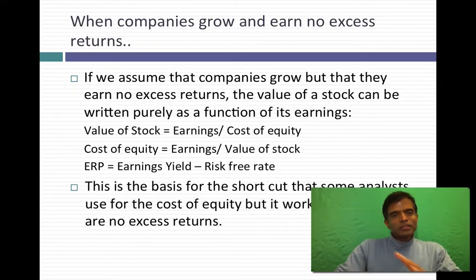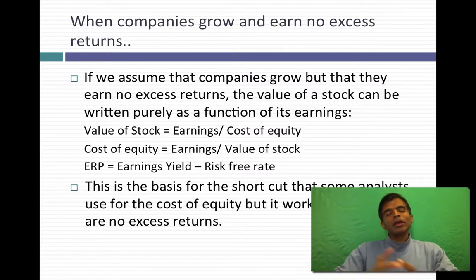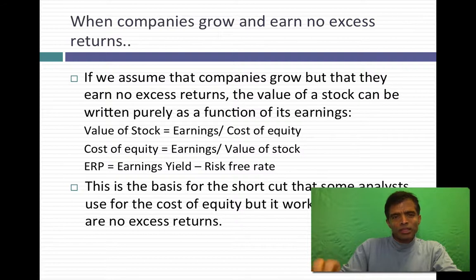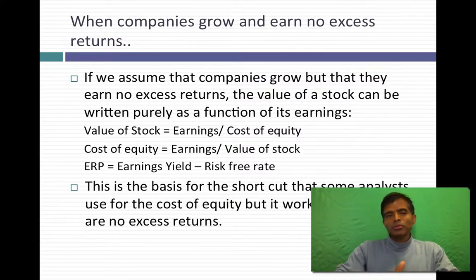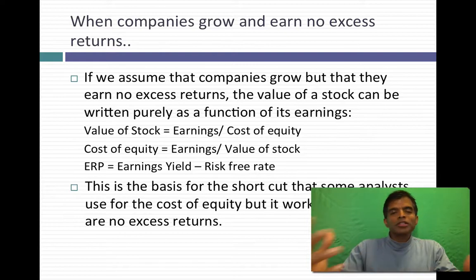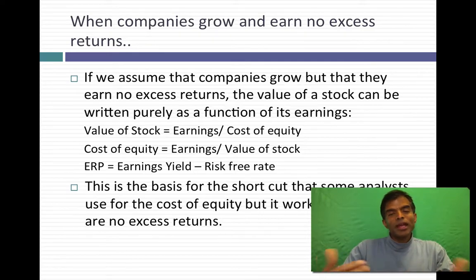Let's move one step further. Assume you have companies growing faster than the stable growth rate, faster than the economy. If they're growing and investing in projects that earn the cost of capital, that's growth without value — no excess returns. In that case, the earnings yield for a stock becomes your cost of equity, and subtracting the risk-free rate gives you the equity risk premium. For example, a price-earnings ratio of 10 gives an earnings yield of 10%; subtract the risk-free rate and you have the equity risk premium.